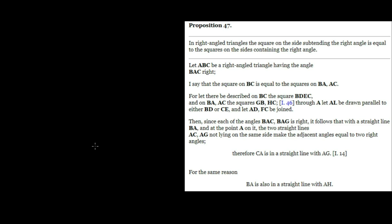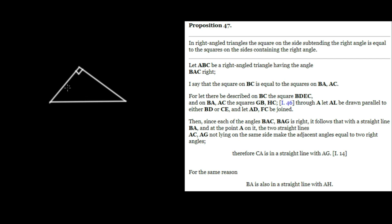Let's move on to Proposition 47, in which we prove the Pythagorean theorem. In right-angle triangles, the square on the side subtending the right angle is equal to the squares on the sides containing the right angle. And let's draw our right triangle. Let ABC be a right-angle triangle.